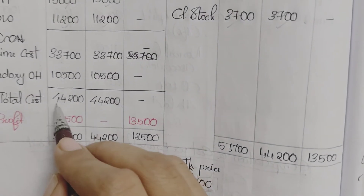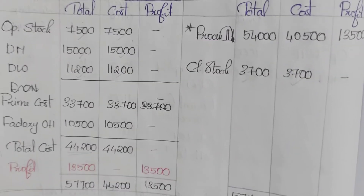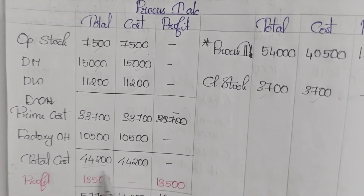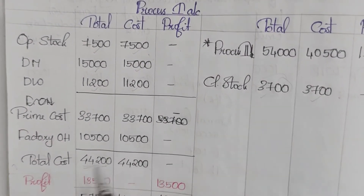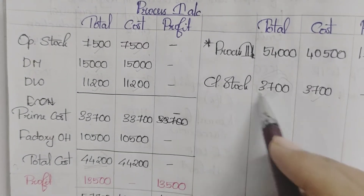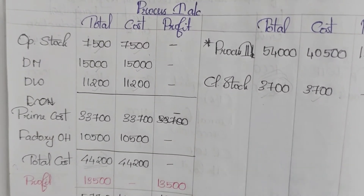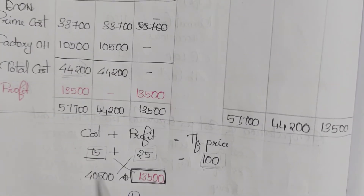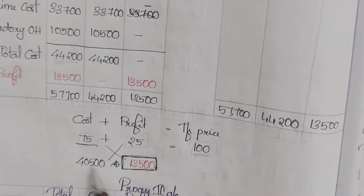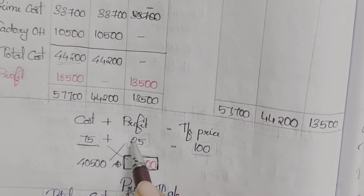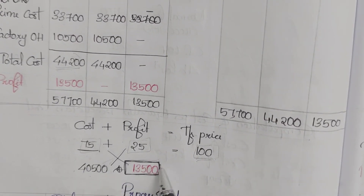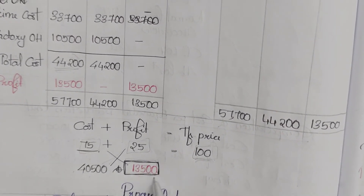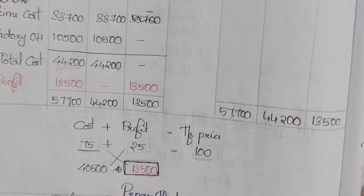Total cost is 44,200. Closing stock is 3,700, so cost available for transfer = 44,200 − 3,700 = 40,500. Cross multiply: 40,500 × 25 ÷ 75 = 13,500 profit transferred. This is the profit element for Process 1 account.